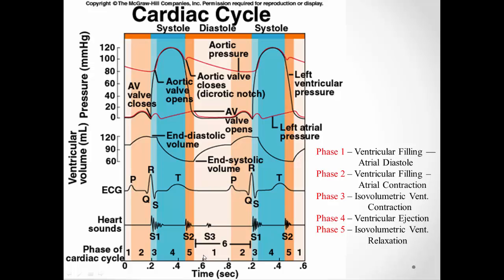Starting at phase one — ventricular filling with the atriums in diastole — you can see that the atrial pressure is slightly higher than ventricular pressure, so blood moves from the atriums into the ventricles, filling them. You can see the ventricular volume is increasing. In phase two, the atriums contract, causing a little bump up in pressure to squeeze more blood into the ventricles. The atrial pressure is still greater than ventricular pressure, so blood continues moving from the atriums into the ventricles, and they continue to fill.